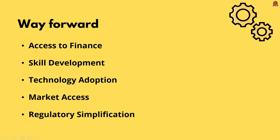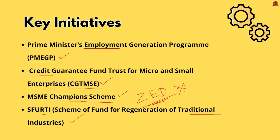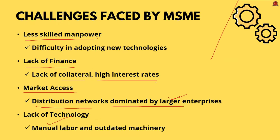Now some way forward for the MSME sector. On access to finance: improve access to affordable credit by simplifying loan procedures and enhancing financial inclusion. On skill development: provide targeted training programs to enhance skills of MSME workers and entrepreneurs. On technology adoption: encourage adoption of modern technology and digital tools to improve productivity and competitiveness. On market access: facilitate better access to domestic and international markets through e-commerce platforms and export incentives. On regulatory simplification: simplify compliance procedures and reduce regulatory burdens to make it easier for MSMEs to operate. In this discussion we have seen basic facts about MSMEs, important initiatives, challenges and way forward.